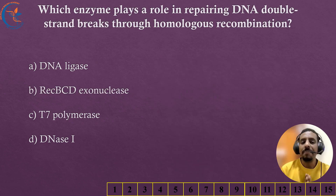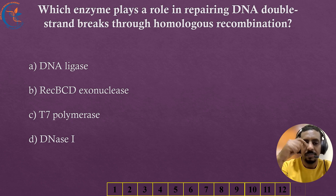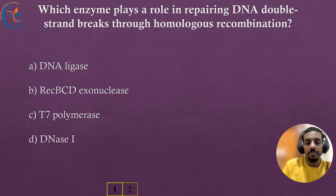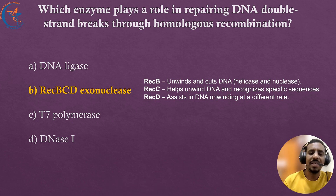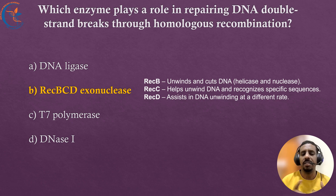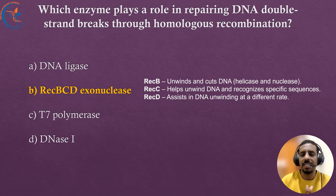Which enzyme plays a role in repairing DNA double-strand breaks through homologous recombination? The correct answer is RecBCD exonuclease. RecBCD is an enzyme complex in E. coli that helps repair damaged DNA through homologous recombination. It consists of three subunits: RecB, RecC, and RecD, which together enable the cell to repair double-strand DNA breaks efficiently.